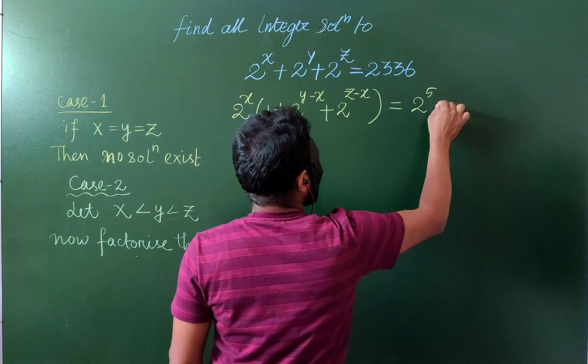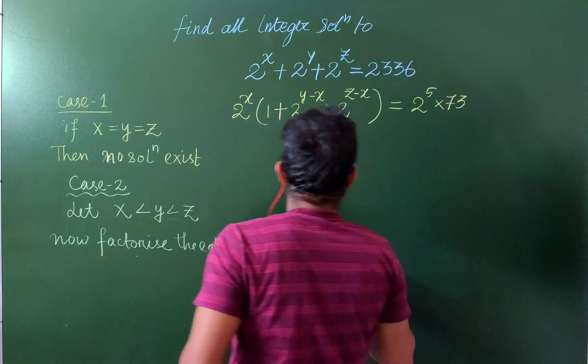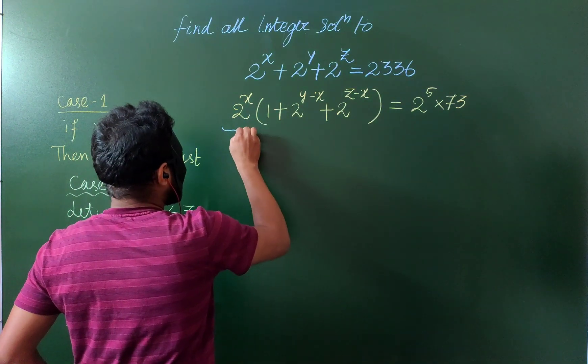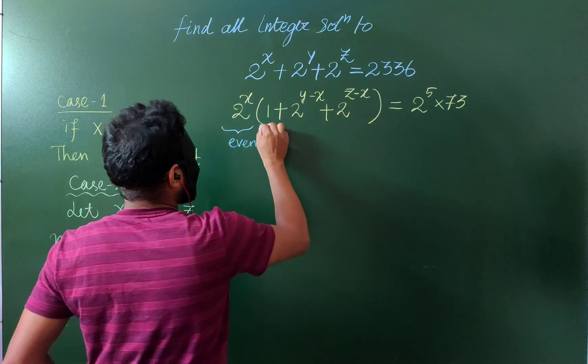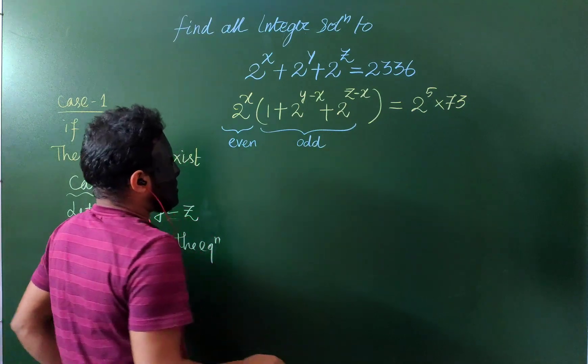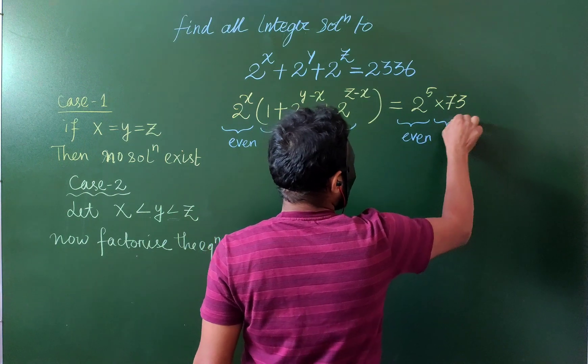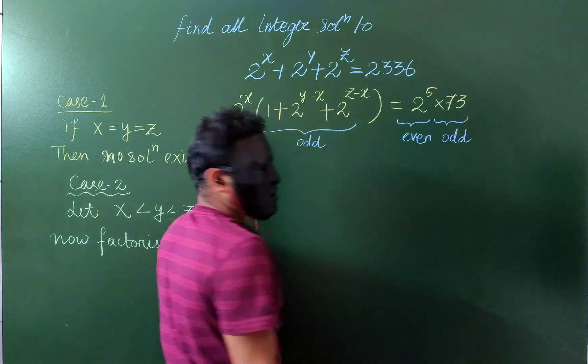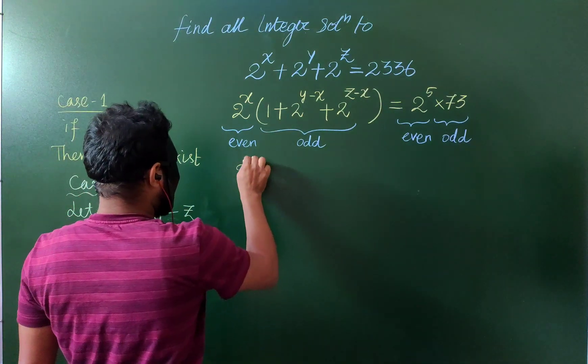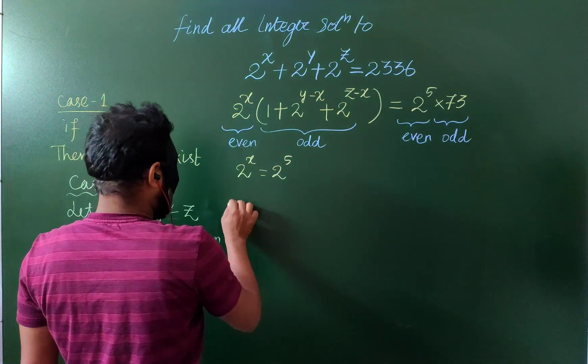Now clearly, this is even and this is odd. Here, this one is even and this one is odd. So we have 2^x equals 2^5.